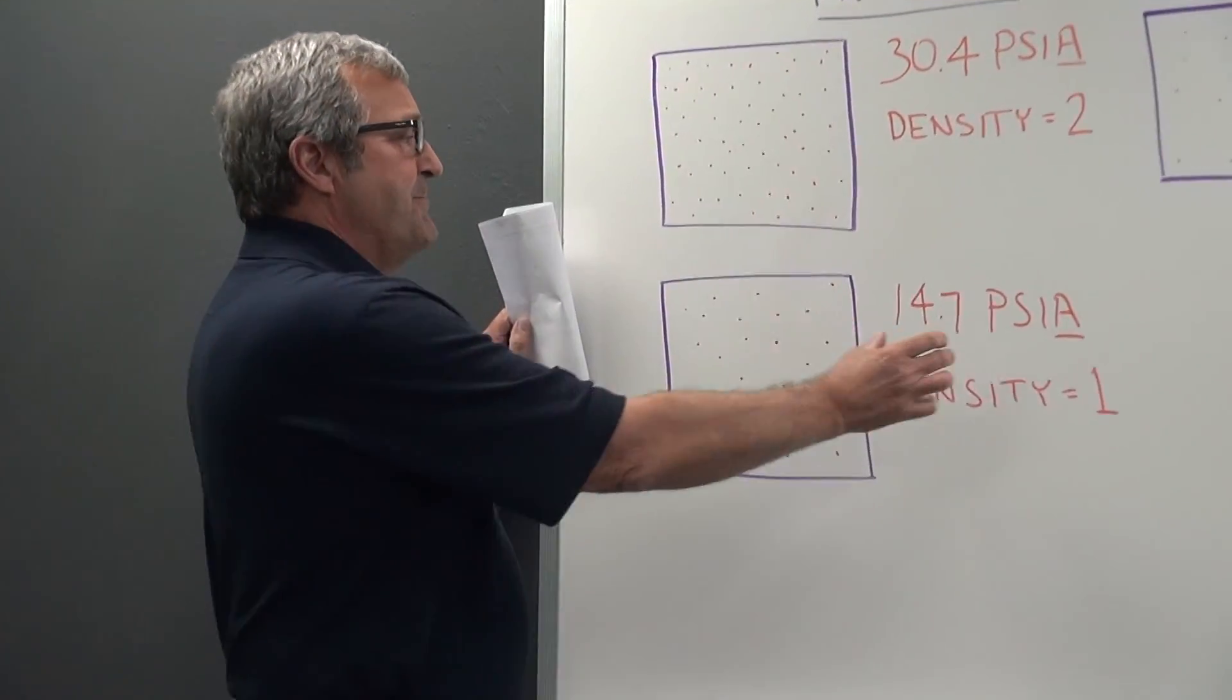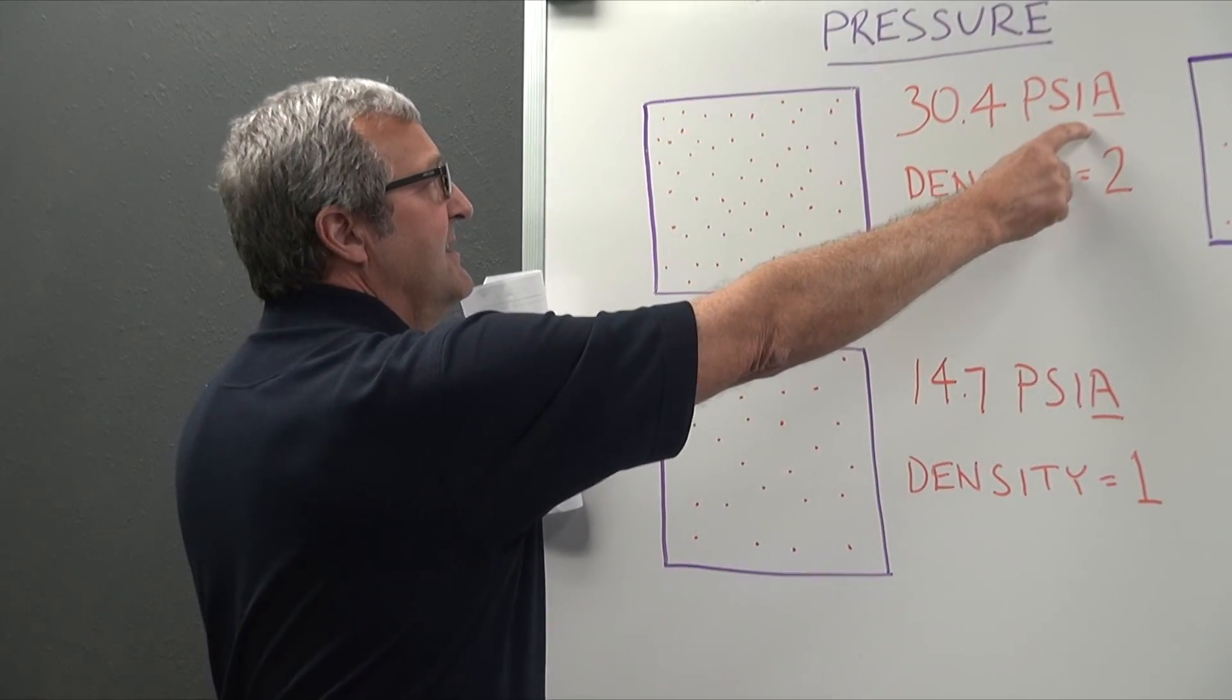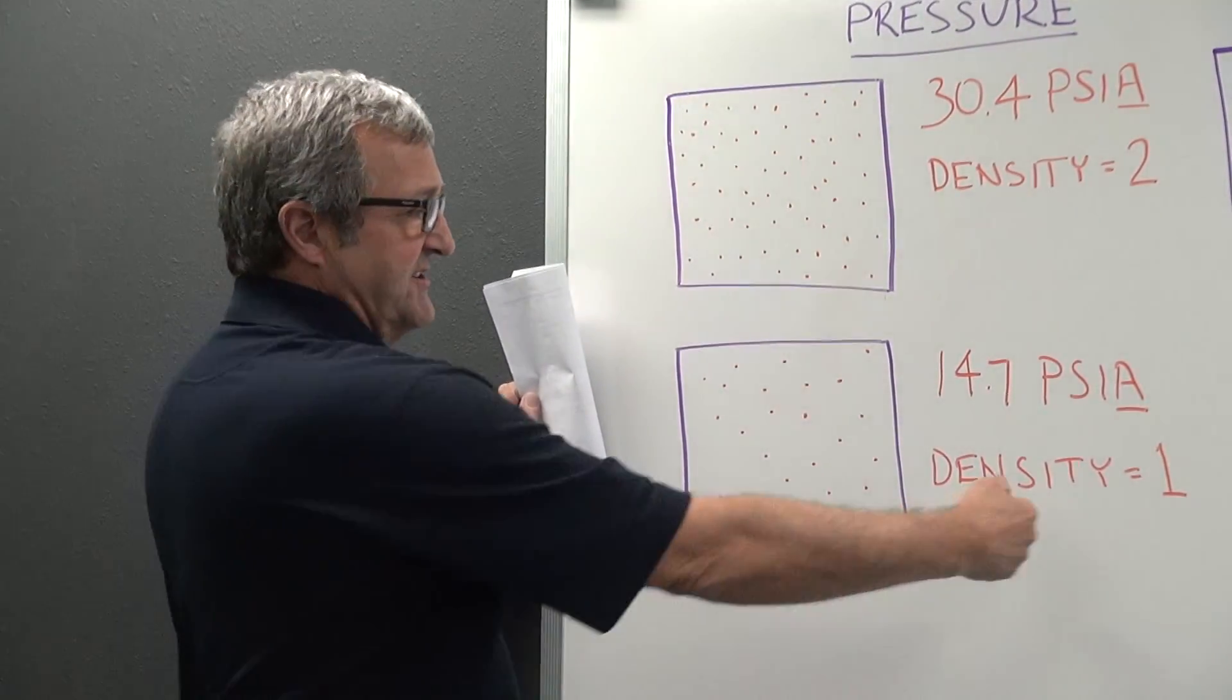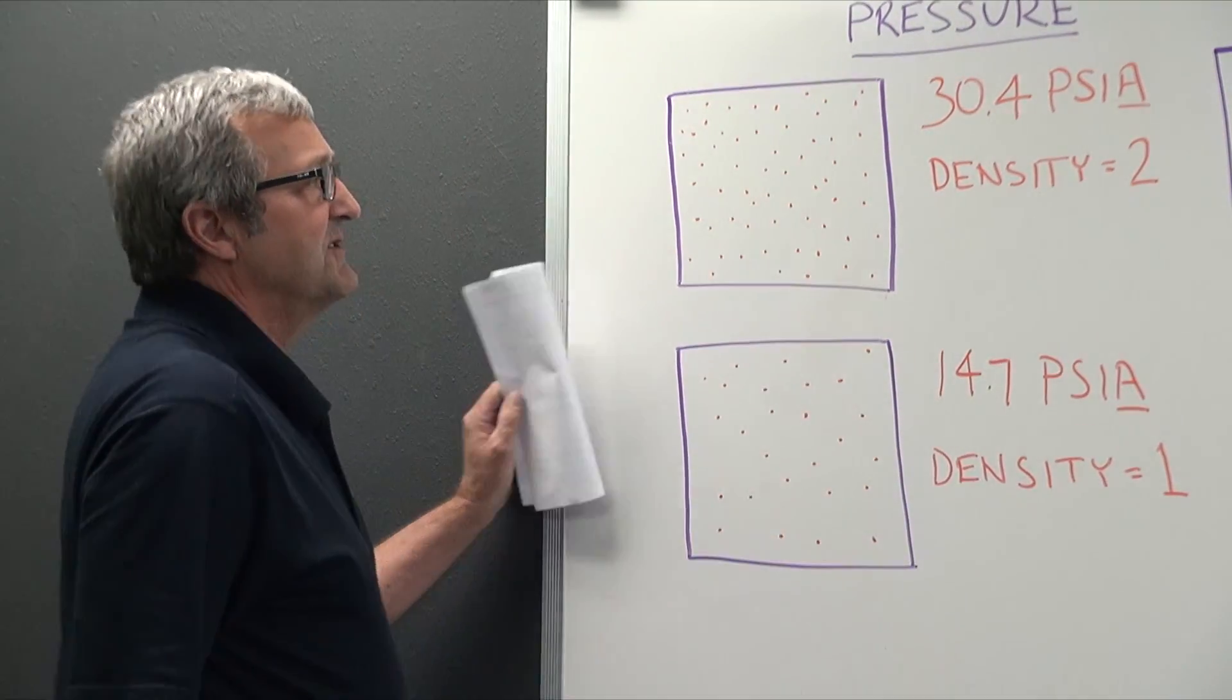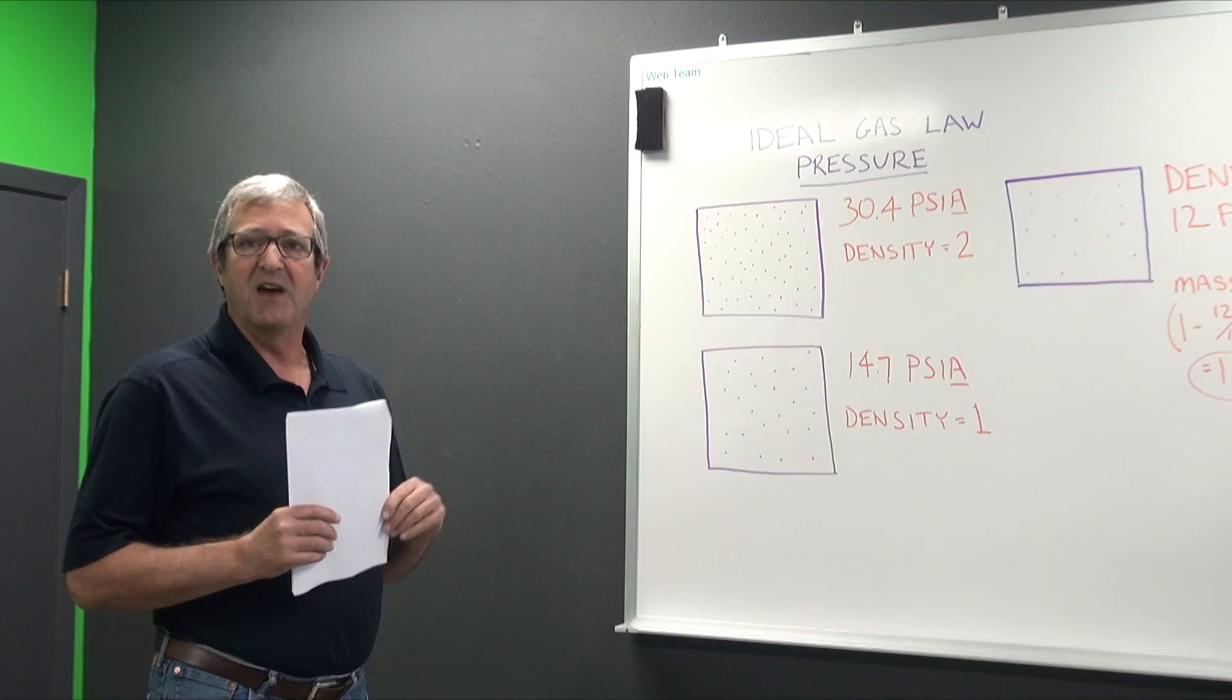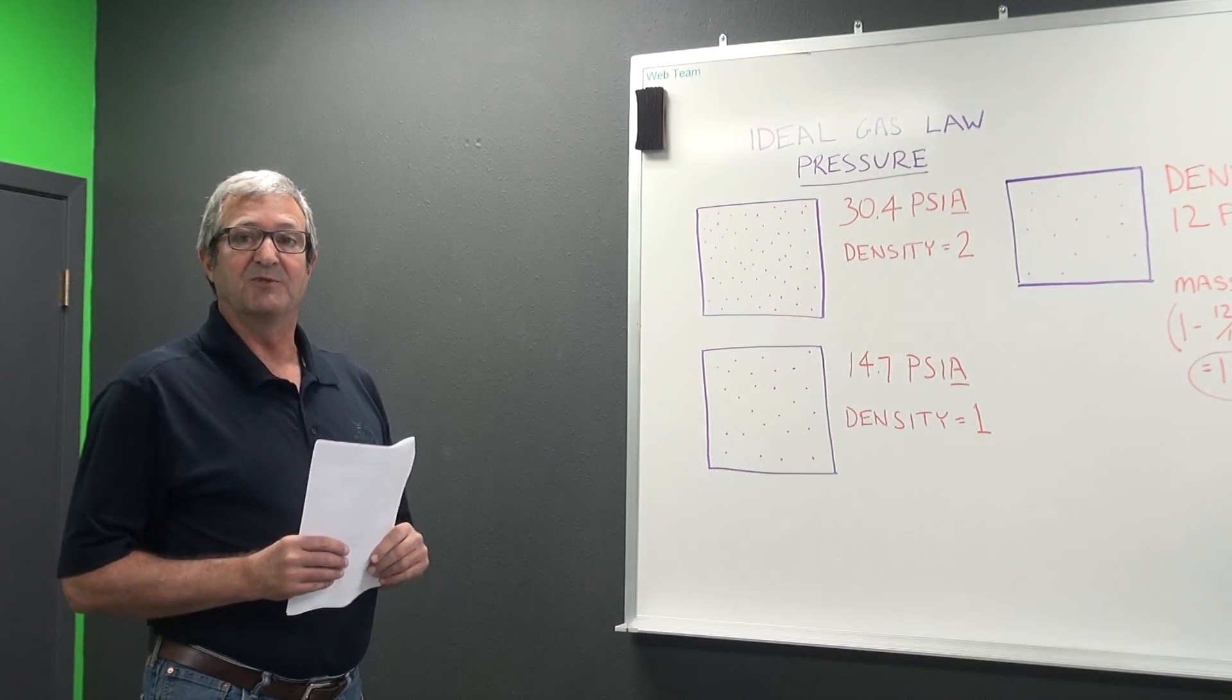Now if you double the pressure from 14.7 PSI to 30.4 PSIA, we've effectively doubled the number of molecules that reside in that same space. Hence the density has increased from one to two. So that's an easy thing to remember I hope and to keep in mind as far as mass flow is concerned compared to volumetric flow, that these flows are very sensitive to pressure is what we're trying to show here.